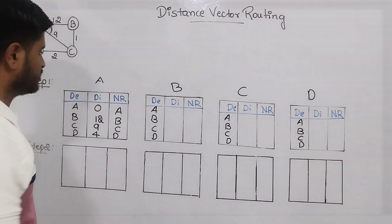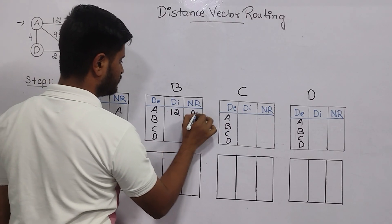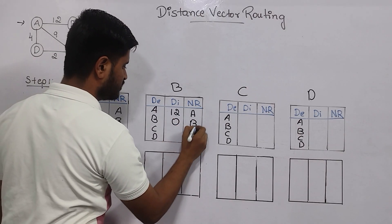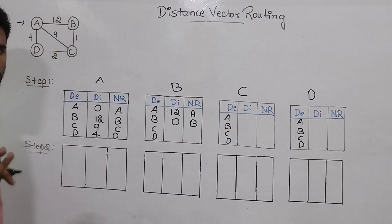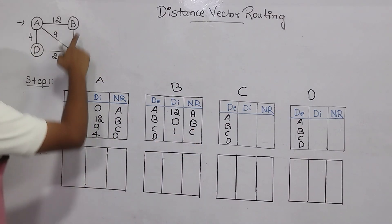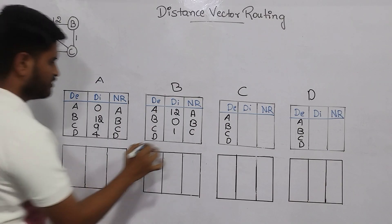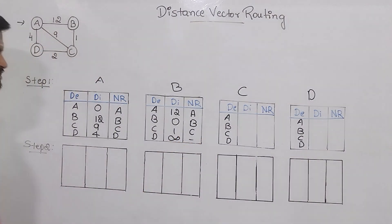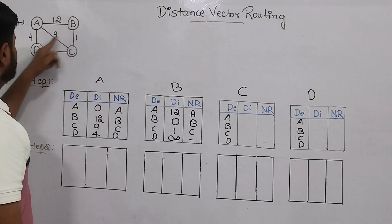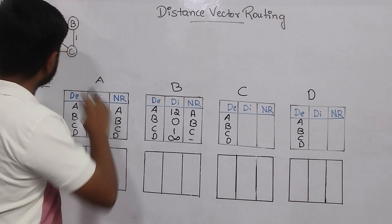Now let's move to the B router. From B to A, it is 12. From B to B, there is no cost, so distance is 0 and you remain at B. From B to C, it is 1. From B to D, there is no direct connecting edge, so you write infinite and next router is unknown, because you don't know the shortest distance to move from B to D directly.